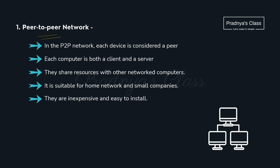The first role-based type is peer-to-peer. In a P2P network, each device is considered a peer — it can work as a client or a server. The main advantage is resource sharing. It is suitable for home or small companies. It is also inexpensive and easy to install.